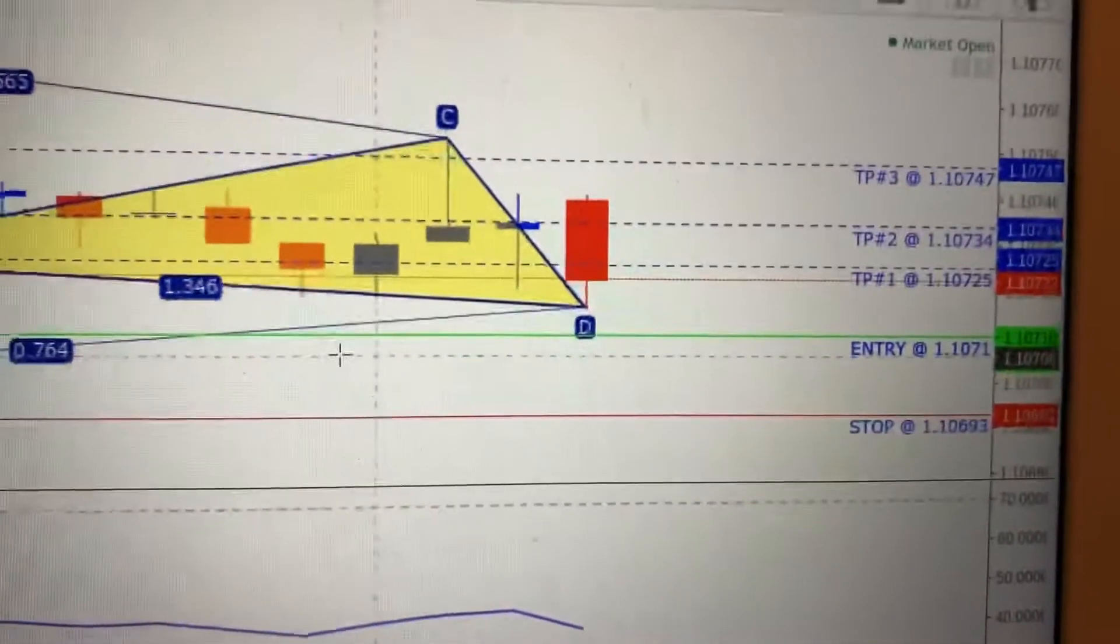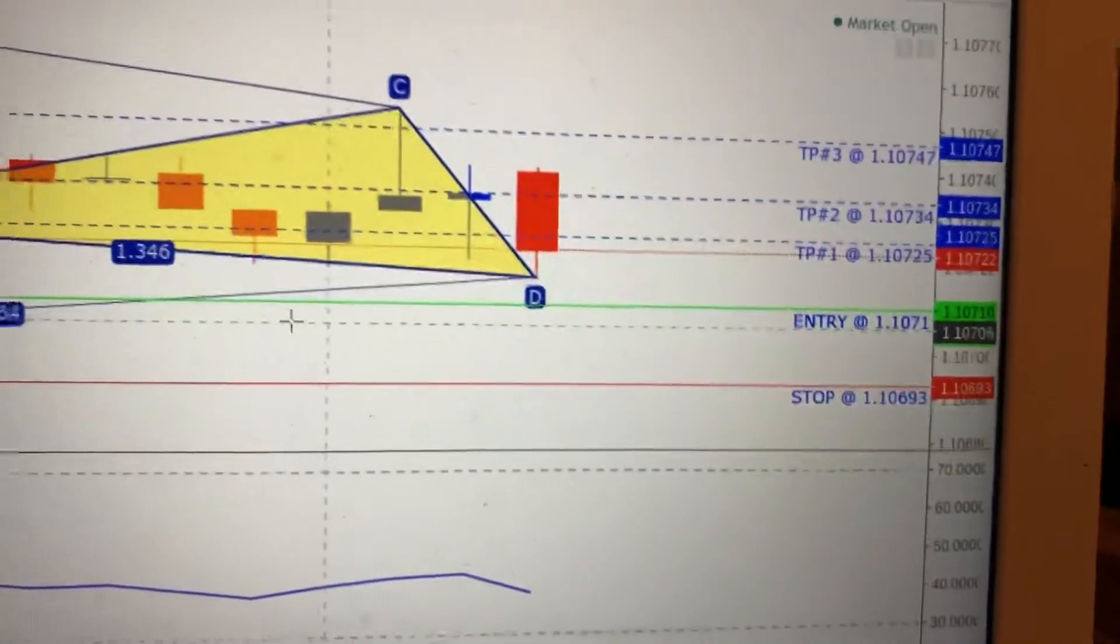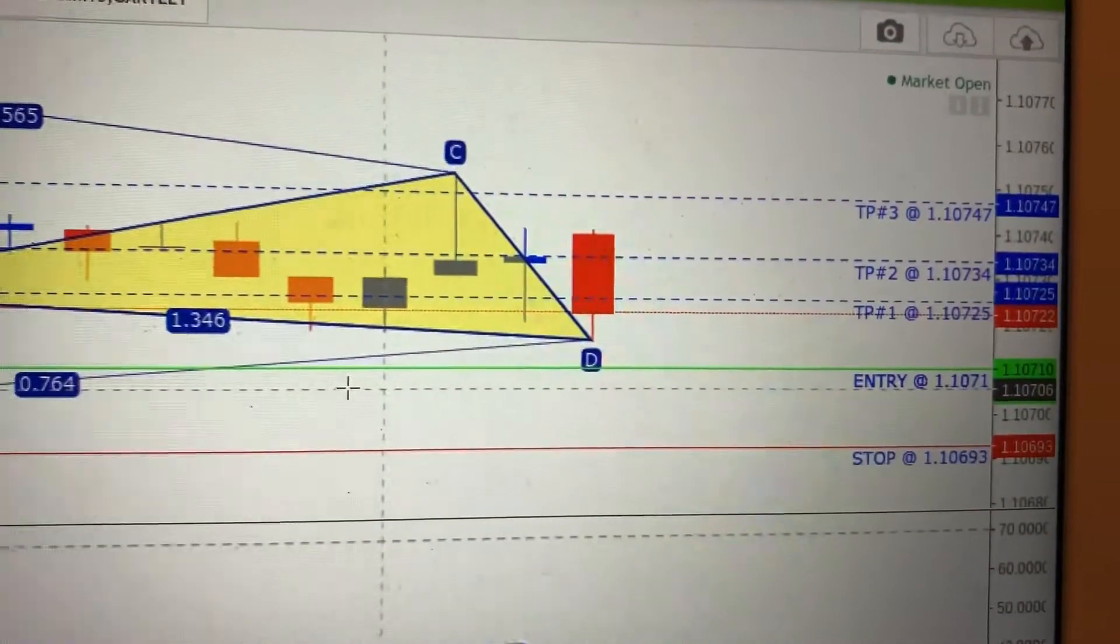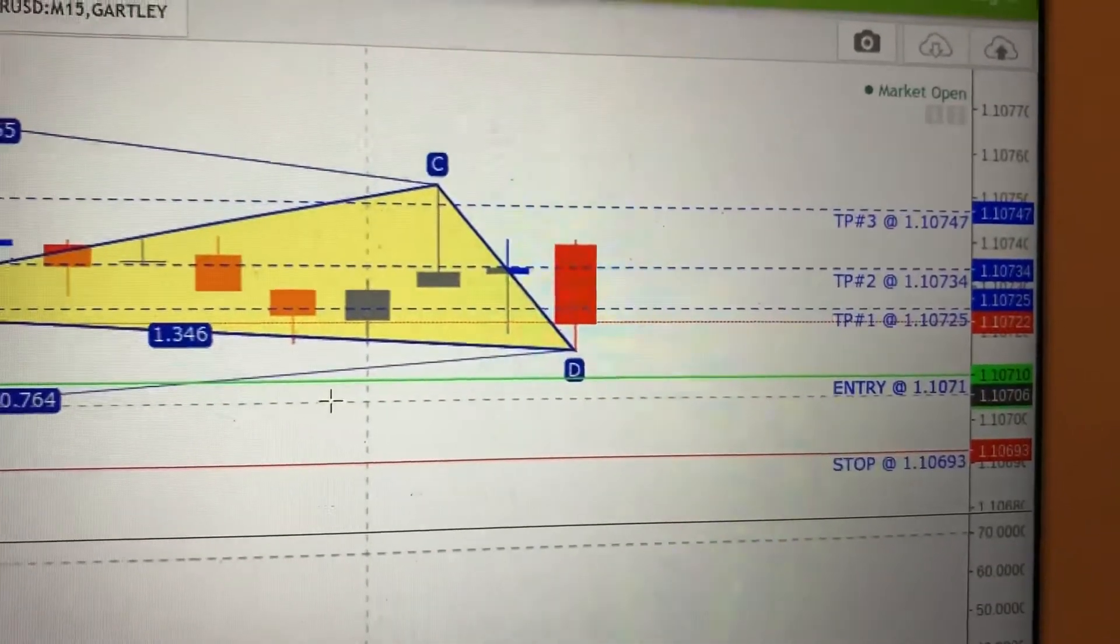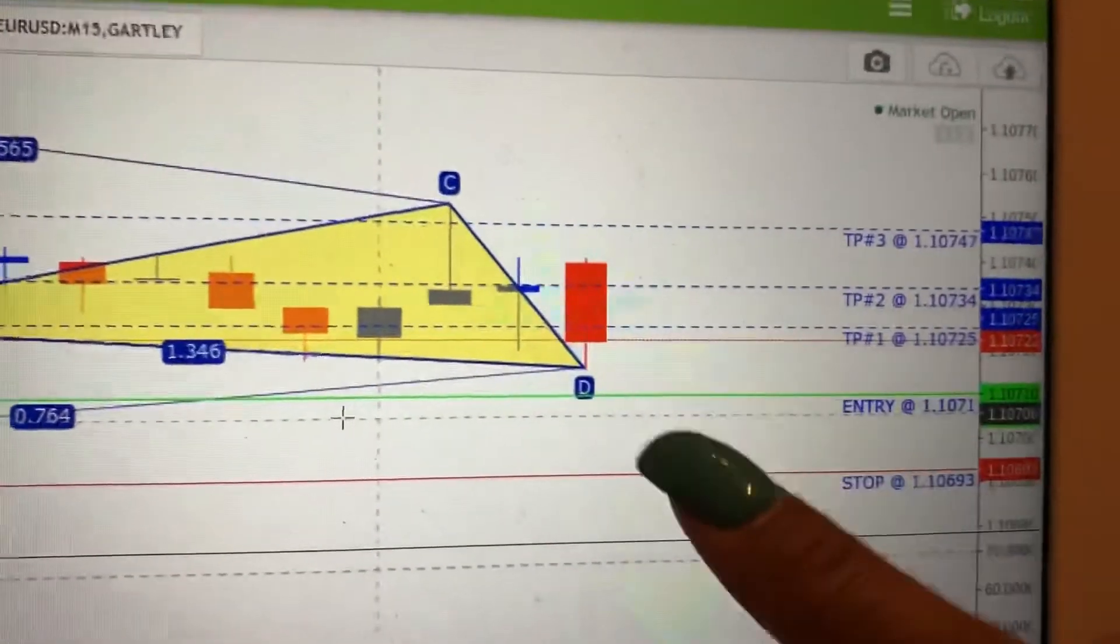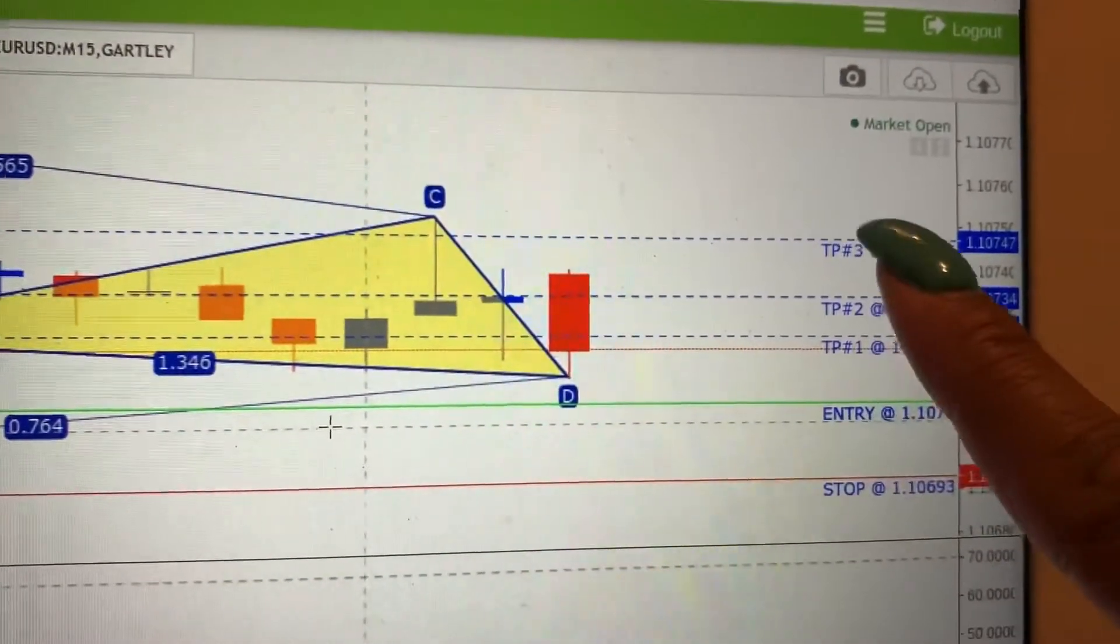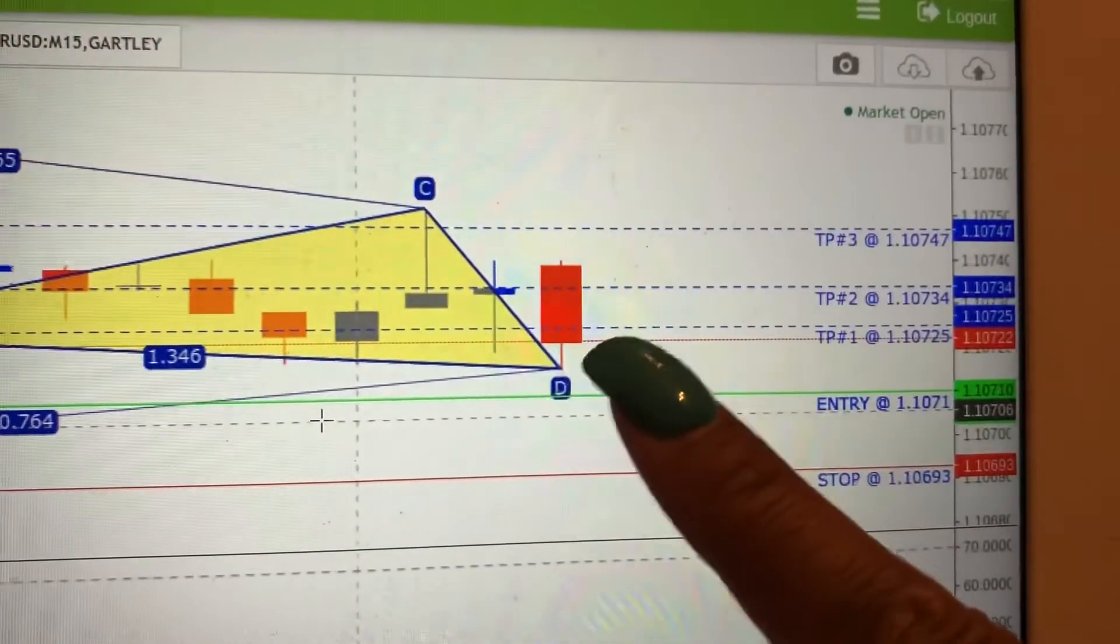Whenever the market needs to go in two different directions before it executes itself, and you set it up that way, then there's something limit, either a buy limit or a sell limit. But we know this is a buy because the D is low, and the entry is low, and the take profits are above. So, this is a buy limit.